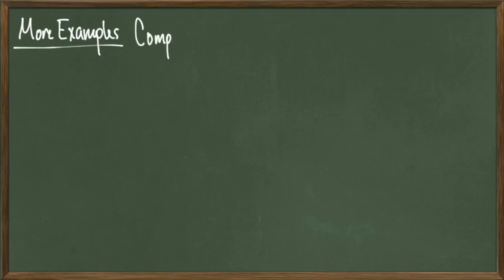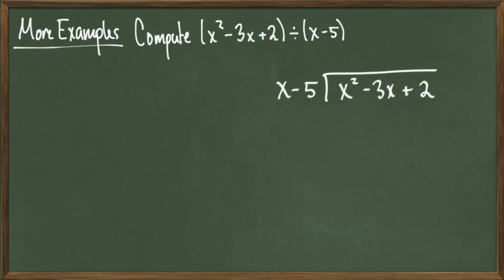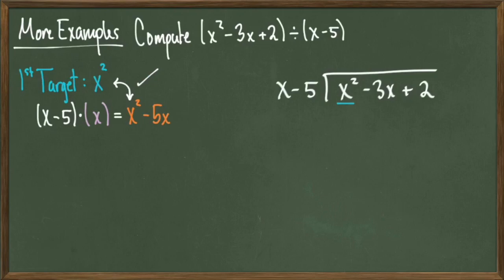Let's do another example just like this. Compute x squared minus 3x plus 2 divided by x minus 5. Place everything around the division bar properly, and then get a first target of x squared, since that is the leading term of the polynomial that we are dividing into.